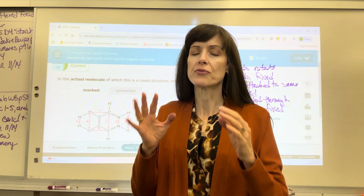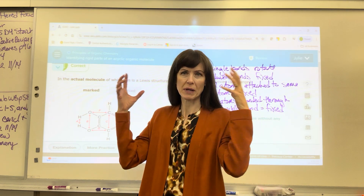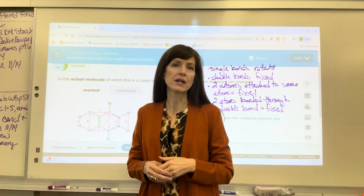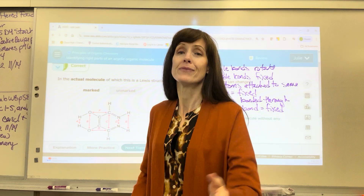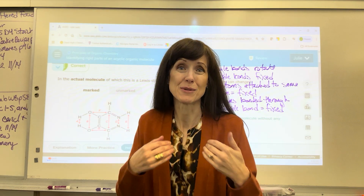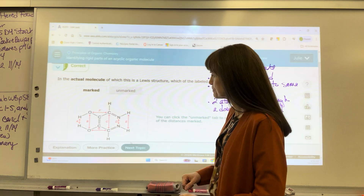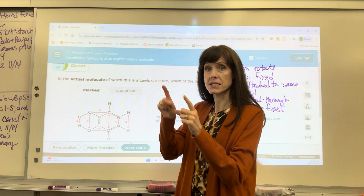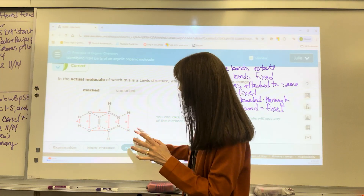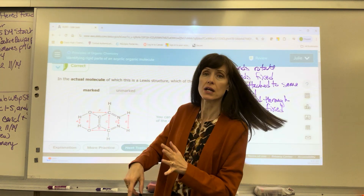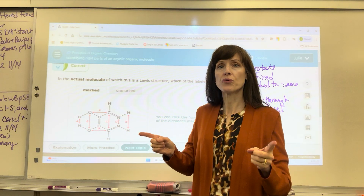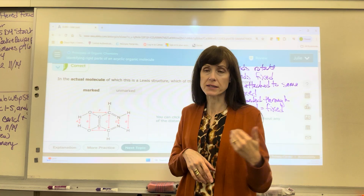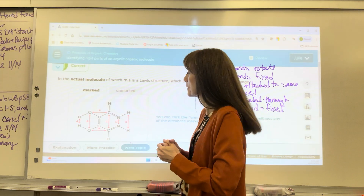Some people are really good with spatial relations and can picture the atoms moving; for others that's more abstract. We're going to find, among the atoms they've marked A through G, which ones move a distance from one another. We're going to use the hacks, and then I'll also explain it spatially.